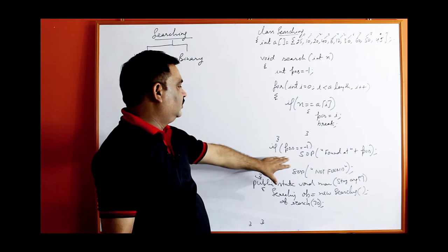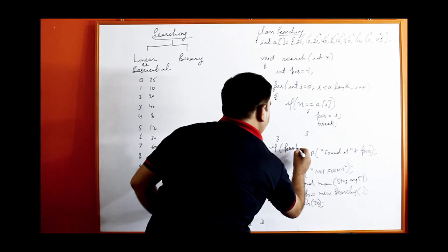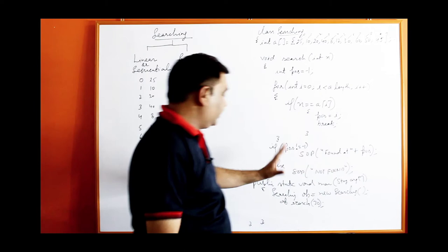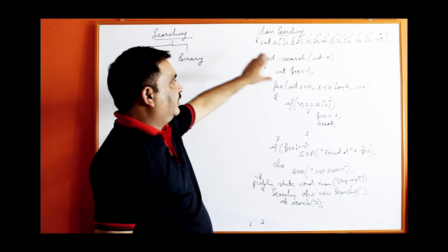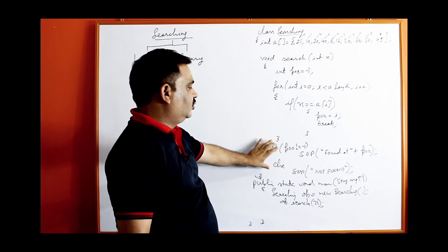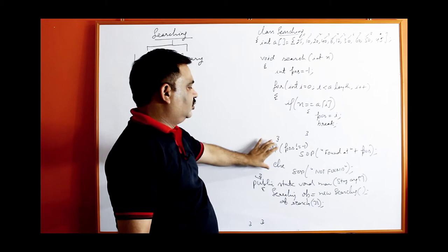pos is now 6, not minus 1. So if pos is not equal to minus 1, print 'found at pos' — it will print 'found at 6'. Another example: if we search 31 instead of 30, 31 will be compared with all values of the array using the loop, and 31 is not present. So out of the loop, the value of pos will remain minus 1, and the else block will execute and print 'not found'.